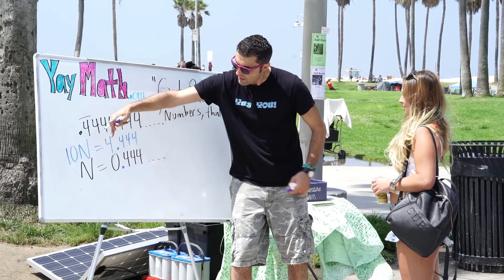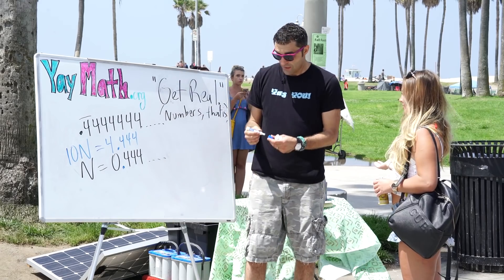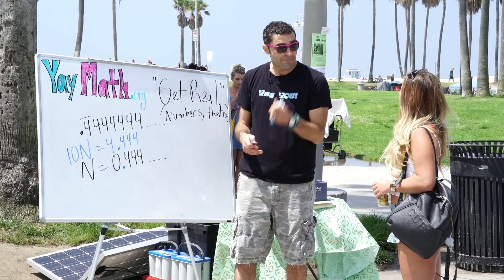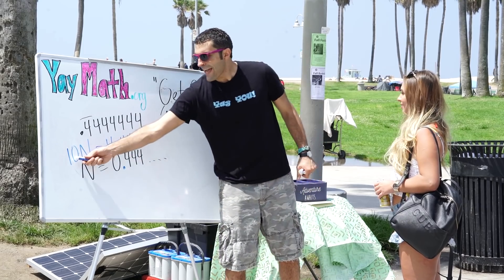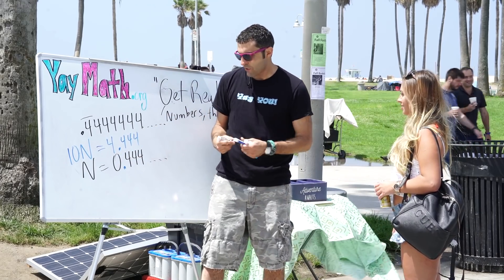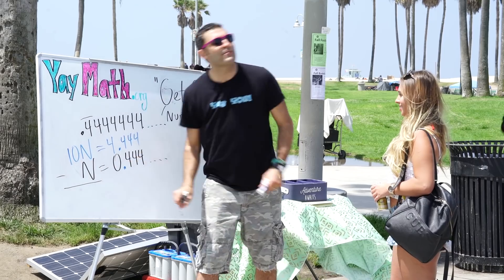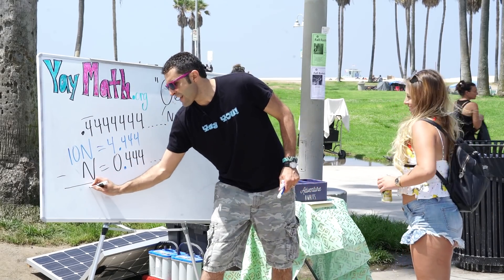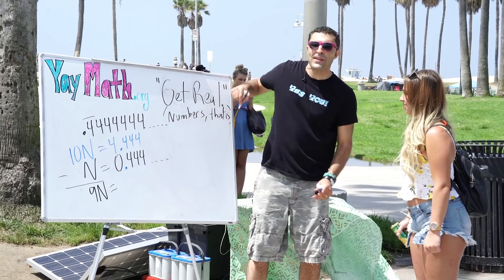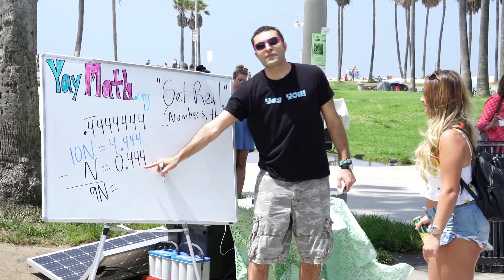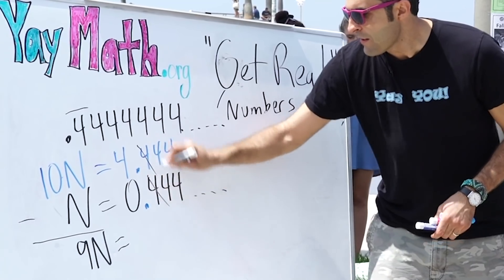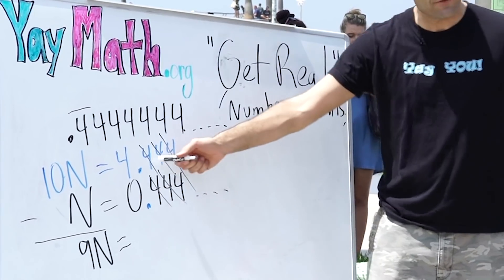We're allowed to do whatever we want as long as we do it to both sides. Now we subtract: 10n minus n. Just like 10 nuggets minus 1 nugget equals 9 nuggets, we get 9n on the left. On the right, 4.4444 repeating minus 0.4444 repeating — the repeating parts cancel, leaving just 4.